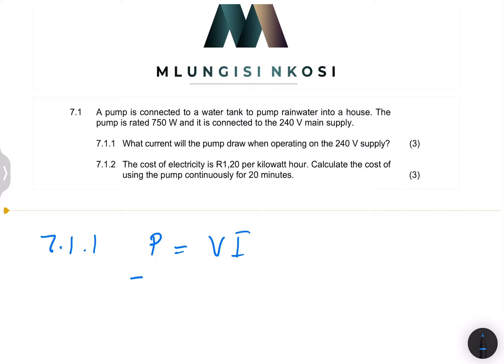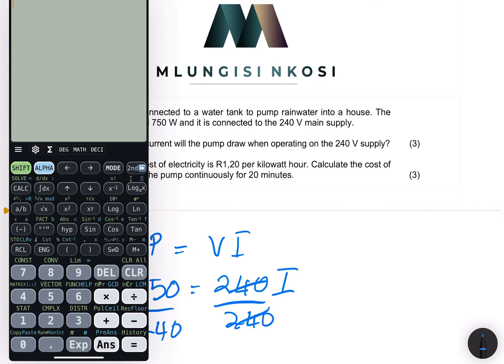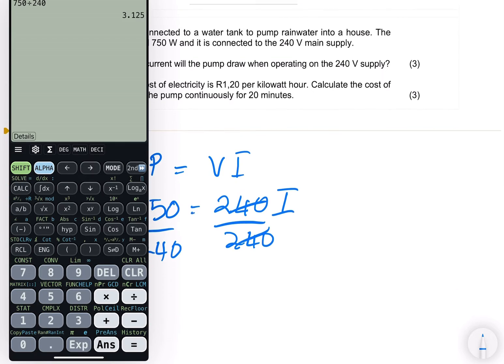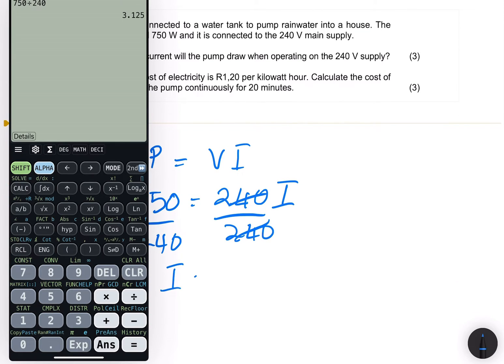So we already have the power 750 watts and our voltage in this case is 240 volts. And we're looking for the current. So obviously we can divide both sides by 240. And we can say, well, that's 750 divided by 240 and I get a current of, so my current will be 3.125 A.